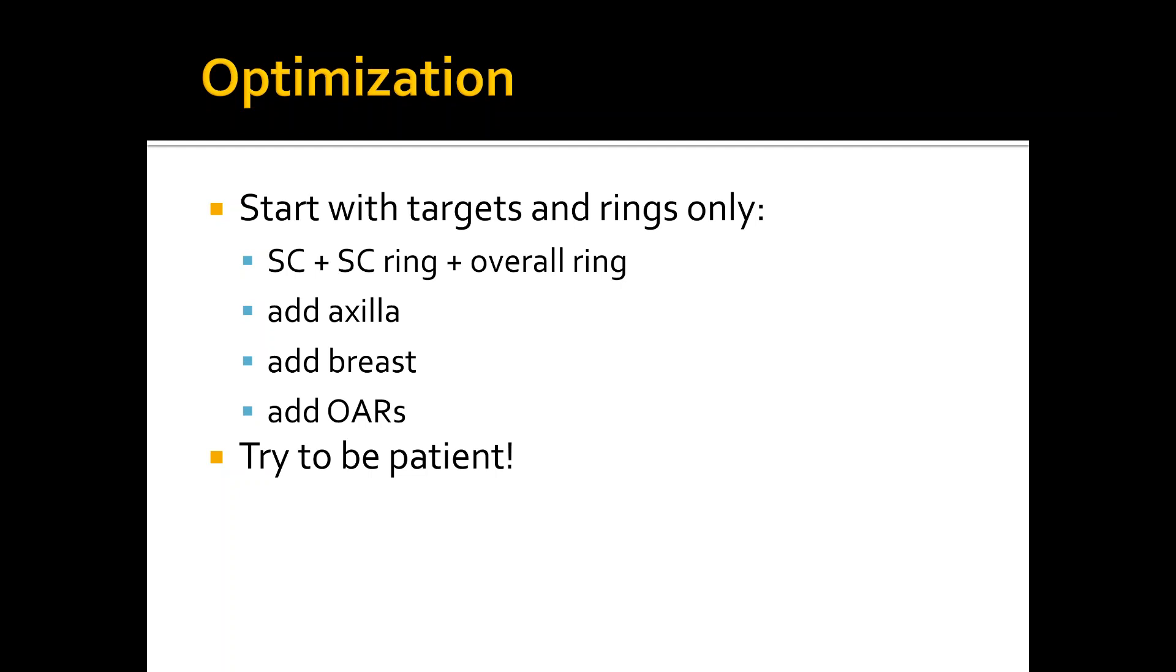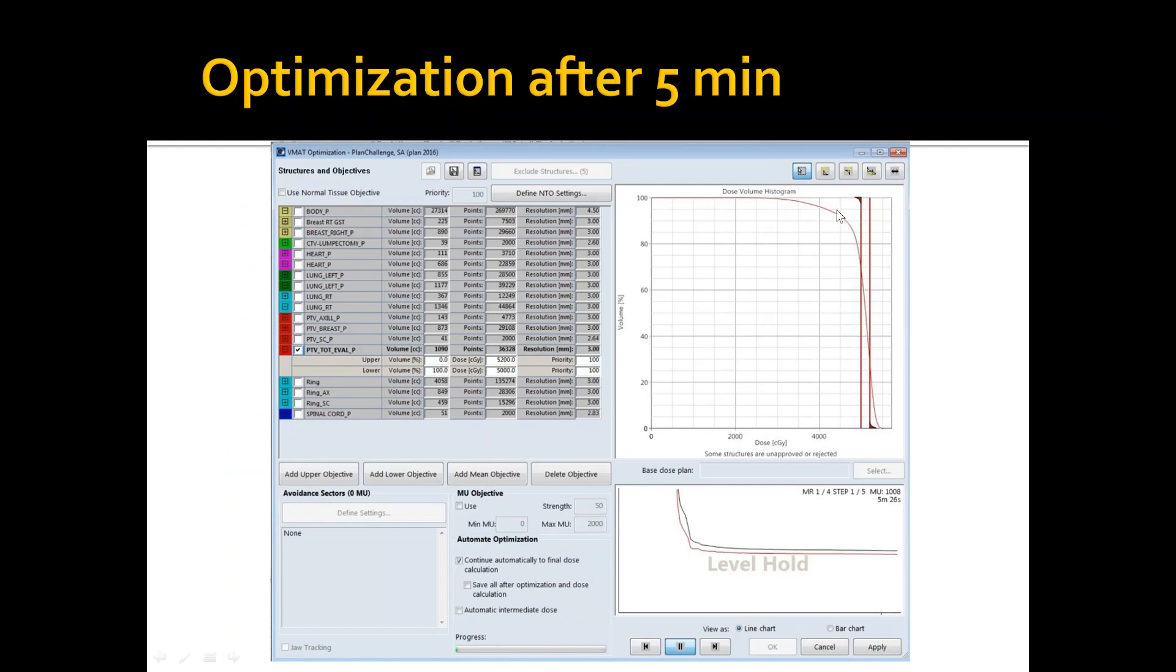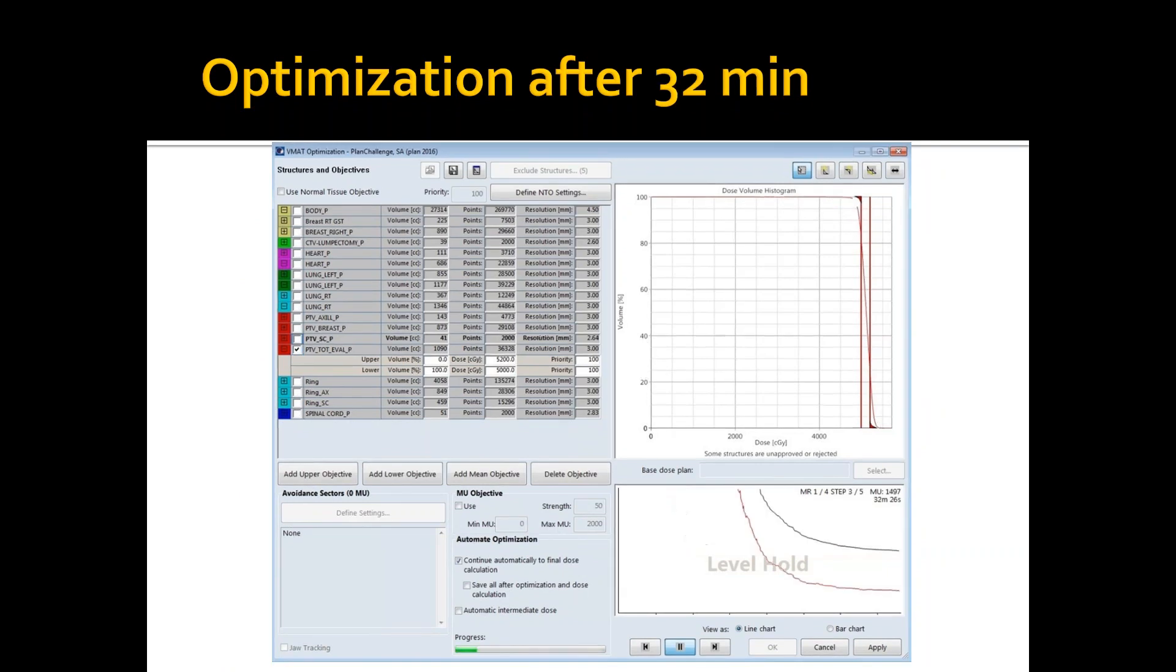This is my optimization after five minutes. As we can see here, it did not achieve the target very well, although the system has plateaued. So when I totally try to be patient, as we can see in this example, after 32 minutes only, and that's step three out of five, and we're still at phase one out of four, we can see that the DVH started to find - the system started to find good solutions for the total target.